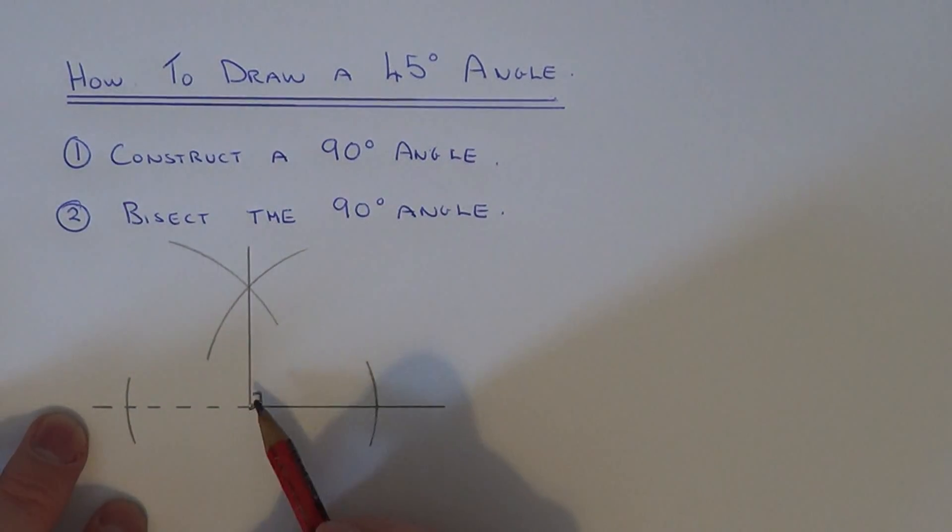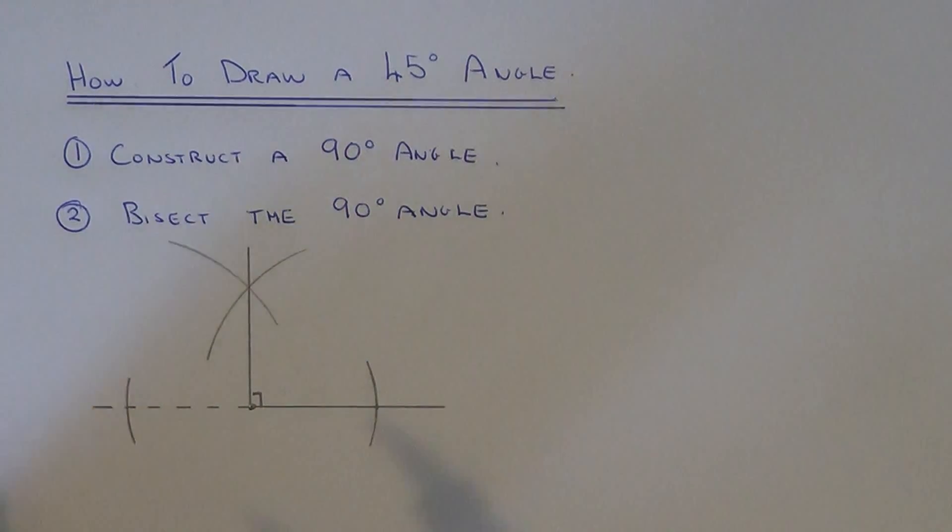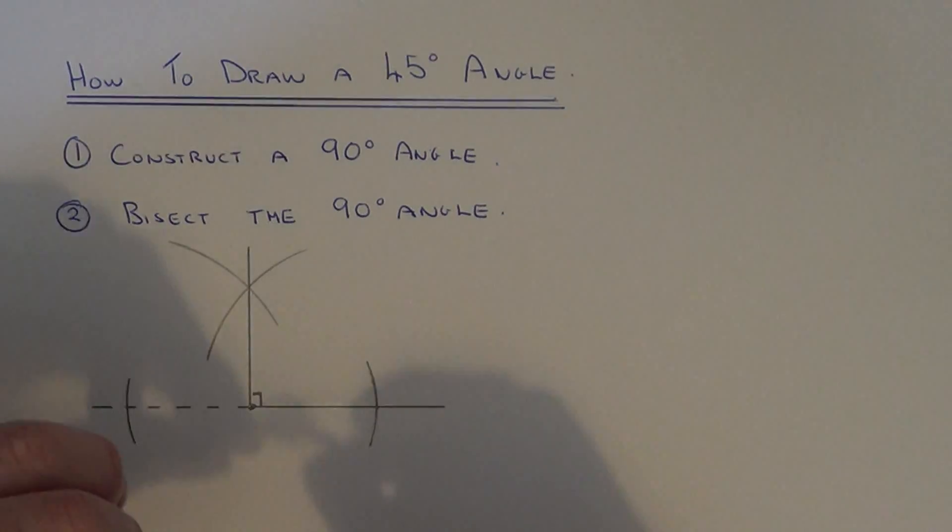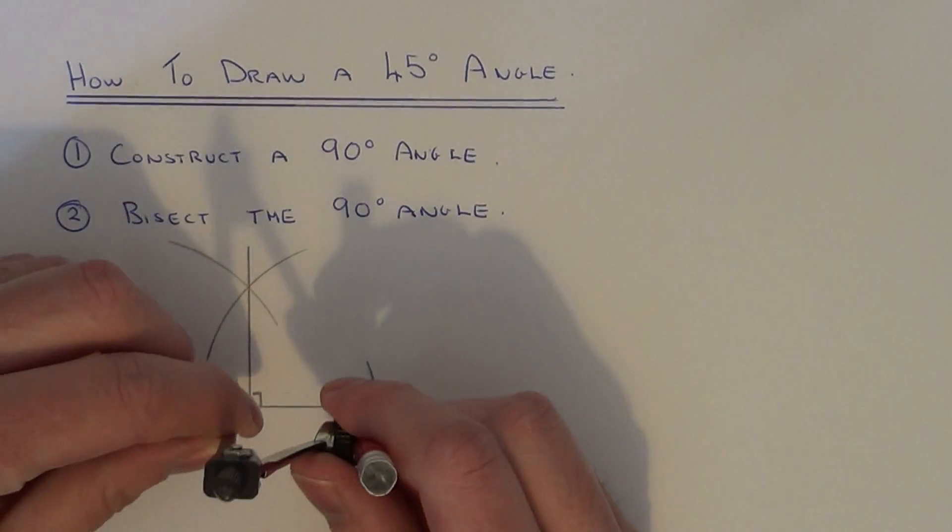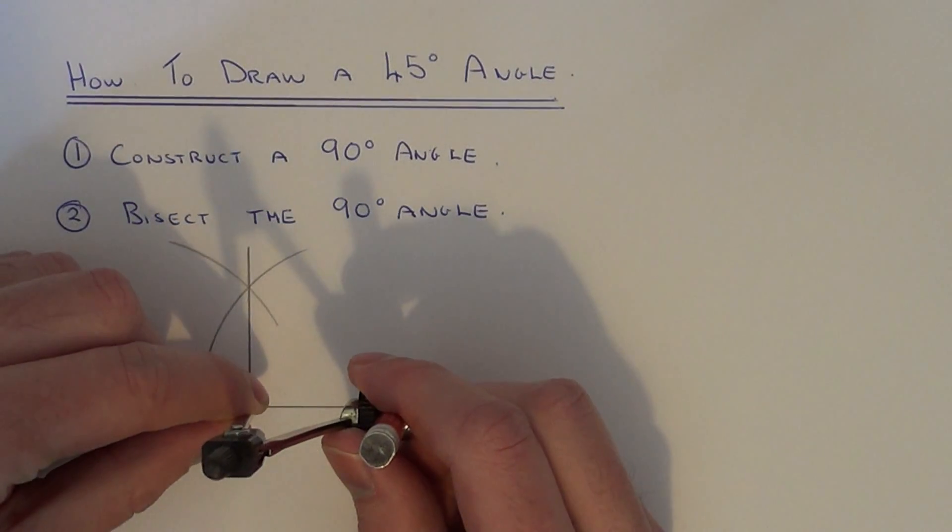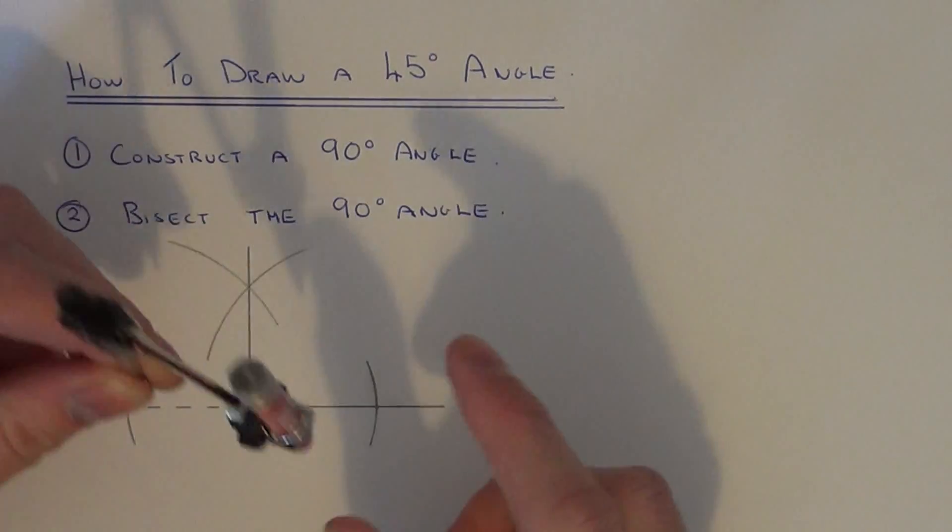The next thing to do is bisect this 90-degree angle, and that will make the 45-degree angle we need. Get your compass again. This time we need two arcs which cross both lines.